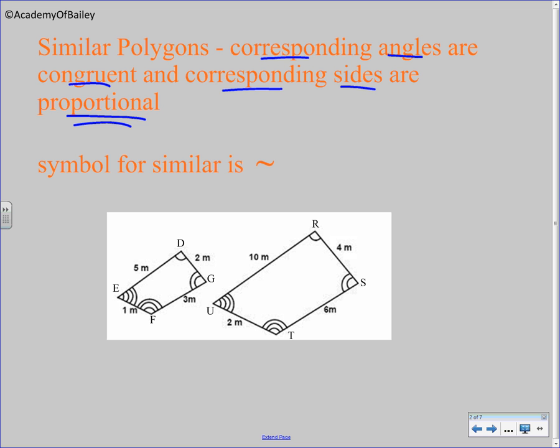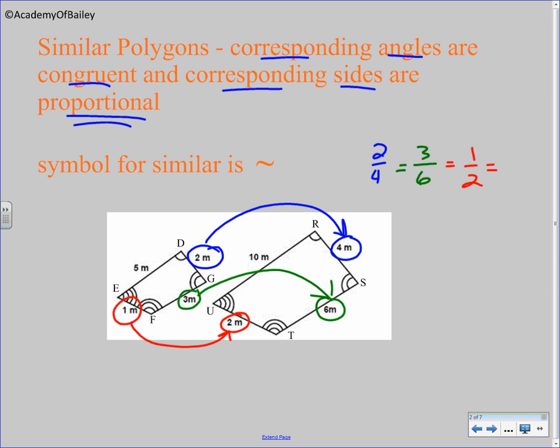What does proportional mean? Well, if we look at corresponding sides, 2 over 4, and I went from here to here, 3 to 6, 1 to 2, and the last one, 5 to 10. Proportional. That means all the sides, all corresponding sides from the left figure to the right figure, they all have a ratio of 1 over 2. If you reduce 2 over 4, 3 over 6, and 5 over 10, that gives you 1 over 2.